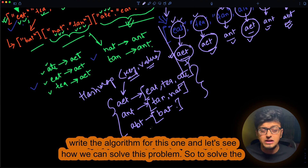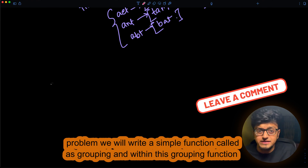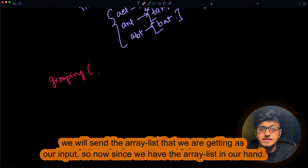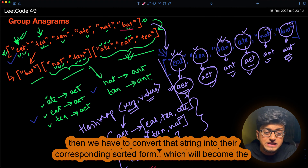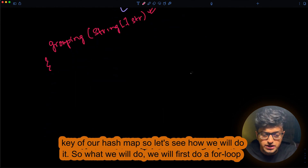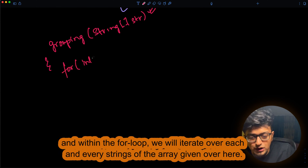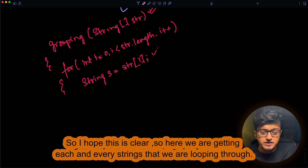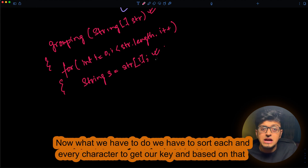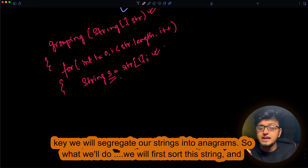Now let's write the algorithm. We write a simple function called 'grouping' which takes the array list as input. We loop through all the strings, then convert each string into its sorted form, which will become the key of our hash map. So we start with a for loop iterating over each string in the array. Then we sort each string's characters to get the key.